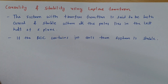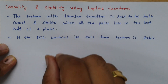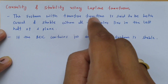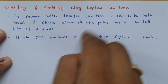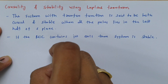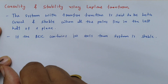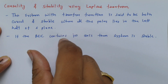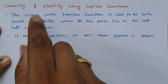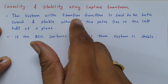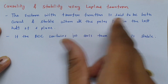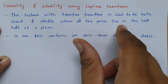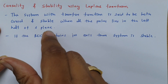Welcome to the Signal and System lecture series. In this session I will explain causality and stability using Laplace transform — how to identify causality and stability using Laplace transform. For that, these two points are very important. First: a system with a transfer function is said to be both stable and causal when all poles lie in the left half of the S-plane.